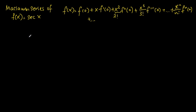The Taylor formula shows us that the function can be expressed as an infinite series called the Maclaurin series, in which the individual term itself is expressed in this form.